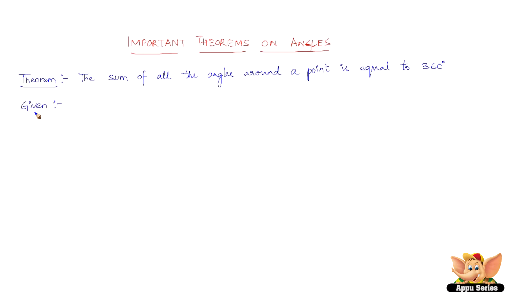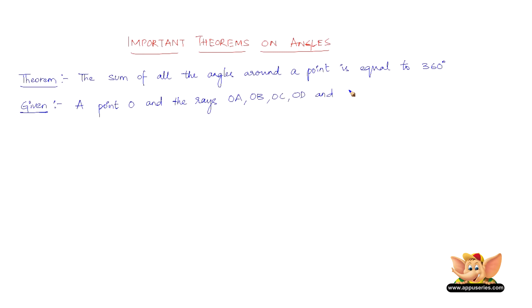What is given to us? We have a point O and the rays OA, OB, OC, OD, and OE making angles around O.